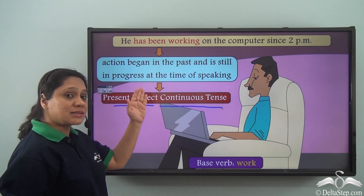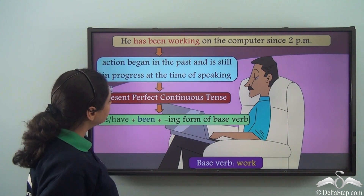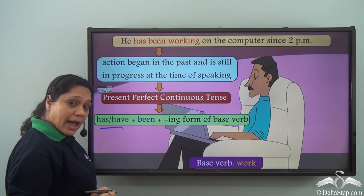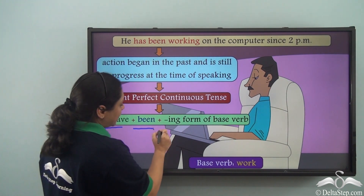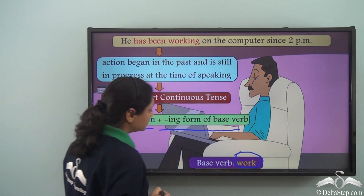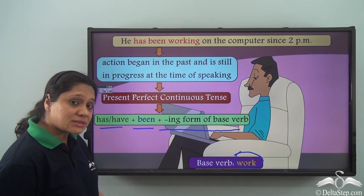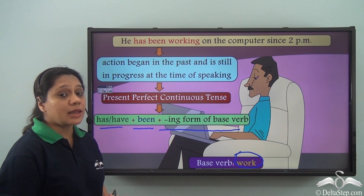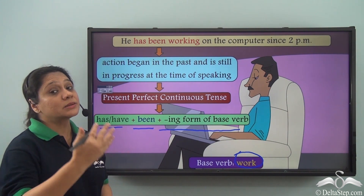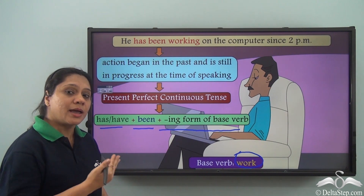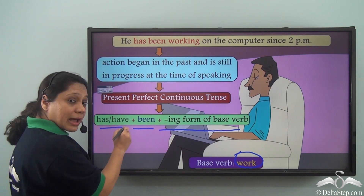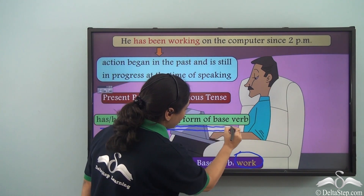This is called the present perfect continuous tense. What is the form of the verb in the present perfect continuous tense? We use 'has' or 'have' with 'been' and the -ing form of the base verb. What is the base verb here? Work. Just like the present perfect tense, the action has begun in the past, but here the action has continued for a period of time till the present and is still happening.